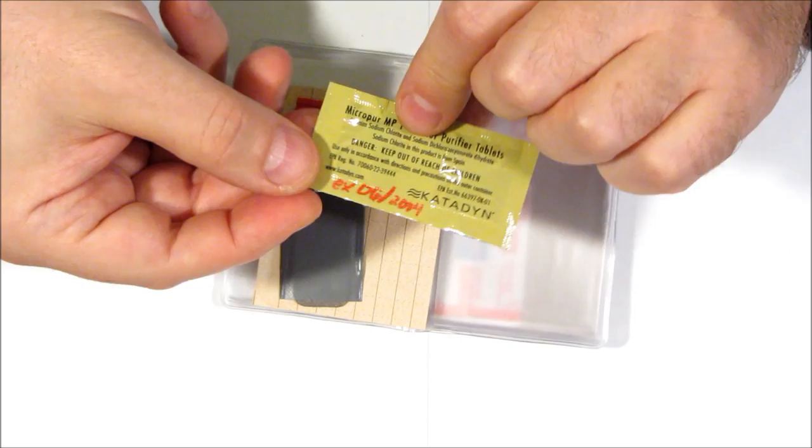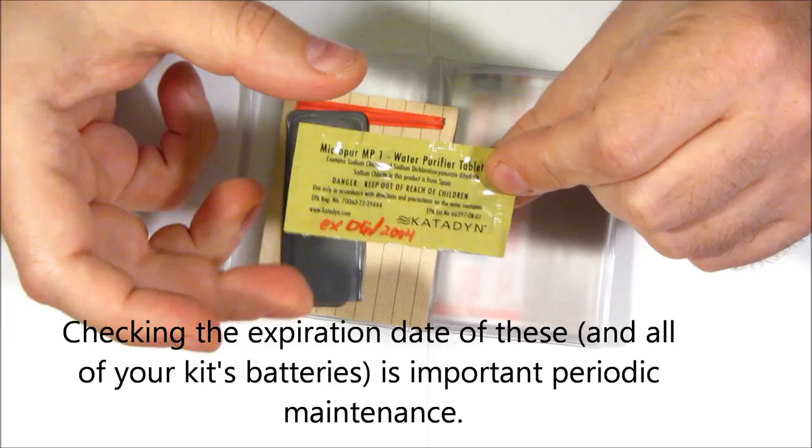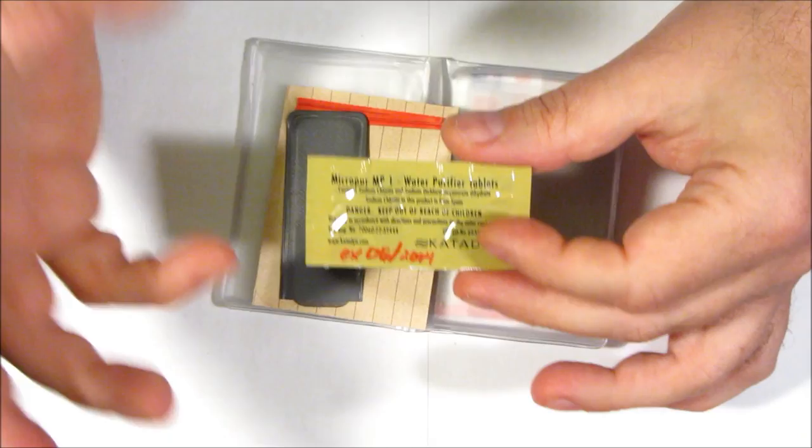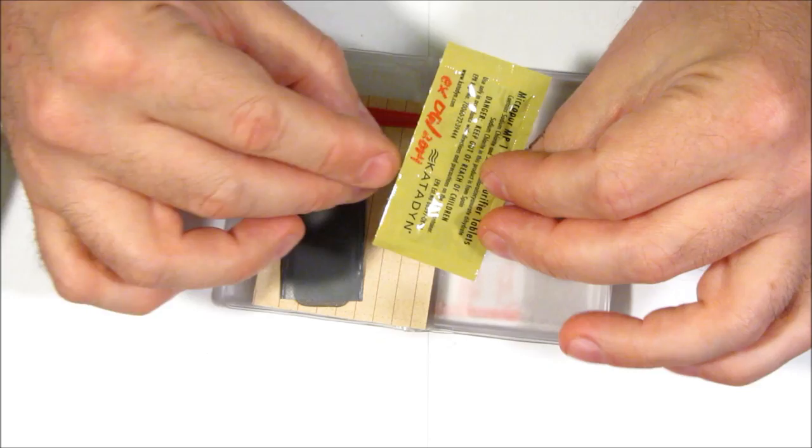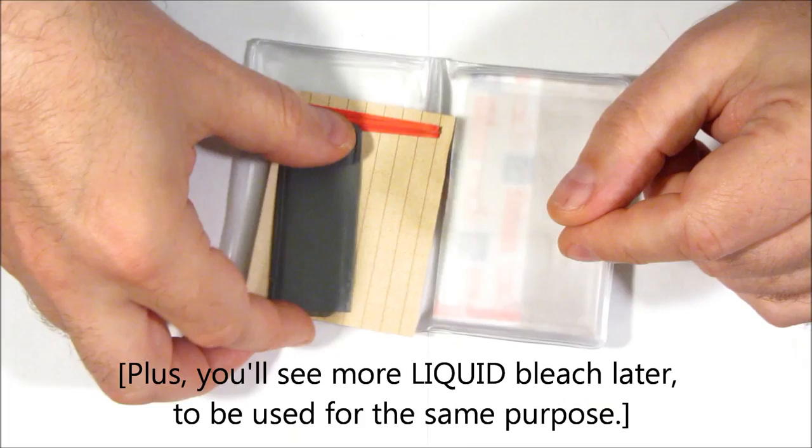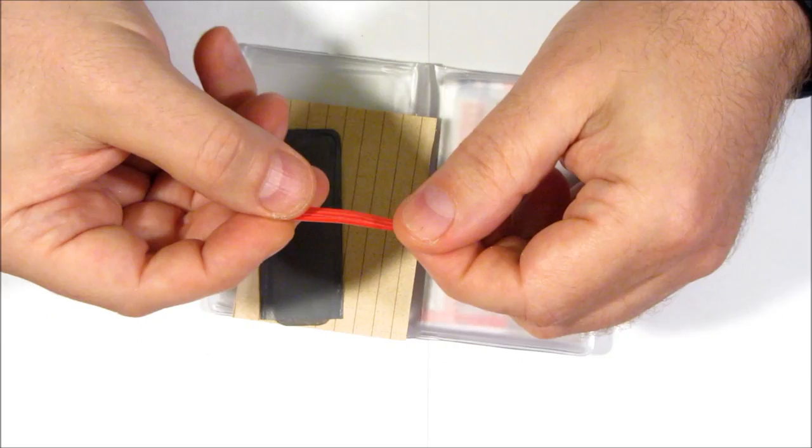These are water sterilization tabs. This is good for a liter of water each. Only two is not a lot. Better kit would certainly have more than this, but remember this is a wallet-sized little small kit, and it's got the expiration date written on it there, 2014. So sterilization tabs is one method of cleaning up water instead of boiling it. This is a twist tie to keep that bag shut, but you can use twist ties for lashing all sorts of things.